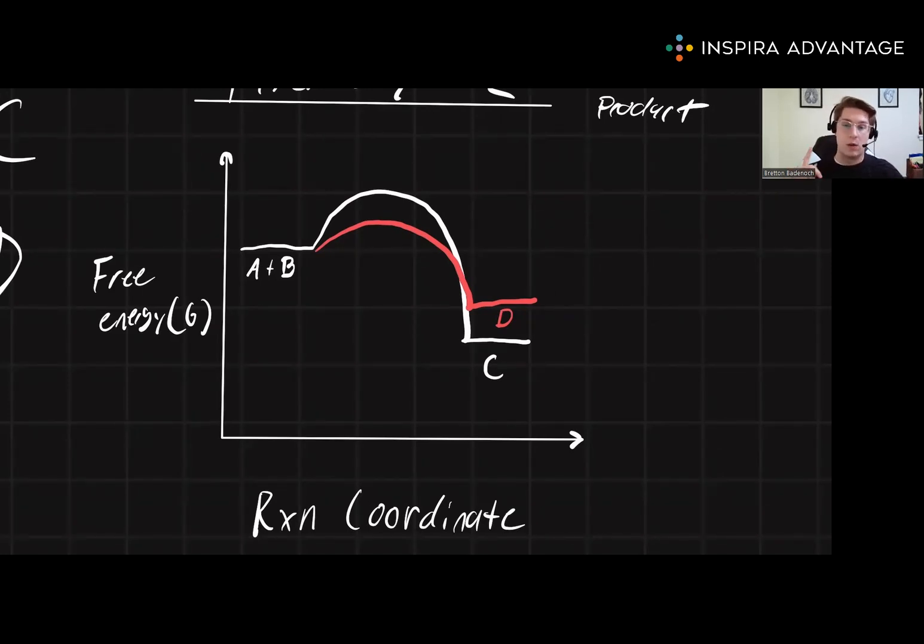This is where the title of the video comes in. A kinetic product is one that is pathway dependent. This is a fancy way to say that it depends on the mechanism and activation energy. Whereas the thermodynamic product only cares about being the most stable product it can. It's going to have the lowest free energy. This also means that the kinetic product is going to form faster at lower temperatures compared to the thermodynamic product.